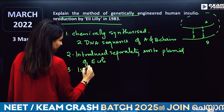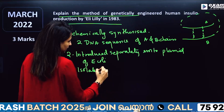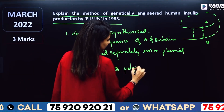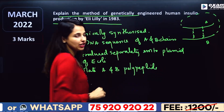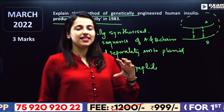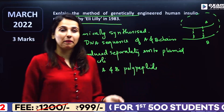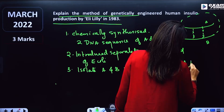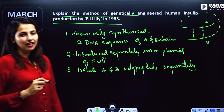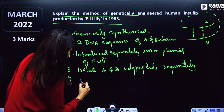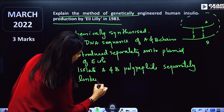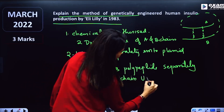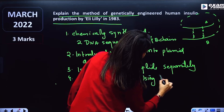Isolate the A and B polypeptides separately from the bacteria. Then, link both chains using disulfide linkage to produce functional human insulin.